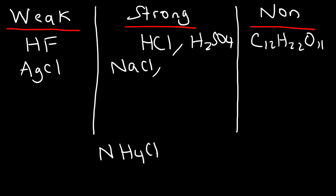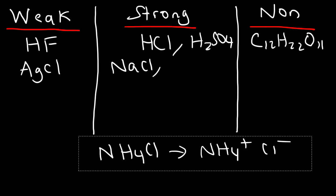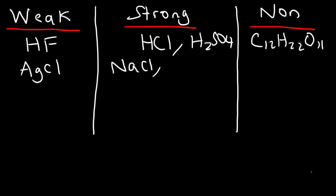What about ammonium chloride? Ammonium chloride breaks up into ammonium cations and chloride ions. According to the solubility chart, ammonium is always soluble, so therefore this is a strong electrolyte. Anytime you have a soluble ionic compound, it will ionize completely.